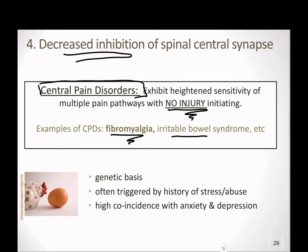One of the things about central pain disorders is you usually see increased pain in multiple regions that don't apparently seem to have anything to do with each other. So if no injury is necessary to initiate this, what is really causing it? The biggest factor that we see is genetics. People do have a genetic predisposition to having a weak descending pain inhibitory pathway.